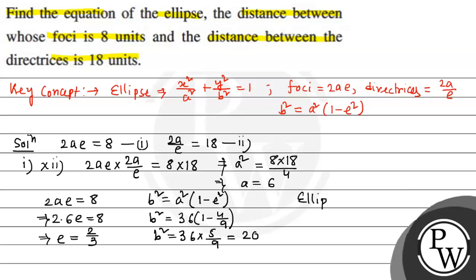Now, the equation of the ellipse is x²/36 + y²/20 = 1.